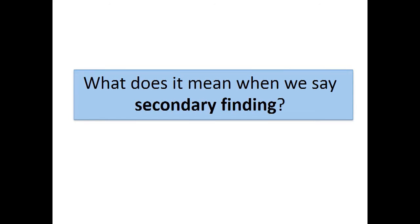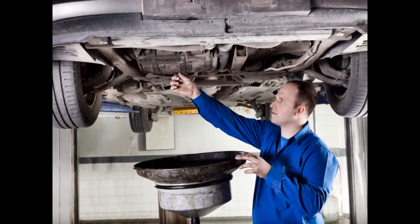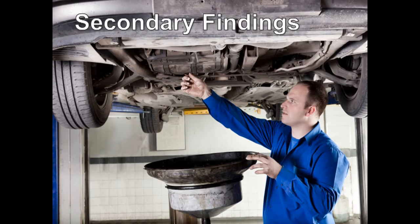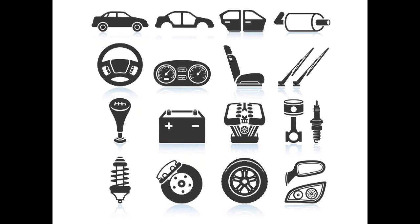What exactly does it mean when we say secondary finding? One way to better understand secondary findings is to think of an everyday example. One example would be if you took your car in for an oil change, and while they are changing the oil, you ask them to look for other problems. If the mechanic found problems with your car other than the oil needing changing, these other findings would be secondary findings. Some of these issues might be very important for the car to work properly or for your safety. Examples include a problem with your brake pads, which could put your safety at risk if the brakes failed, or a problem with your car battery, which may cause your car to not start one day. These other problems are unrelated to why you took your car in, but you might want to learn about them.